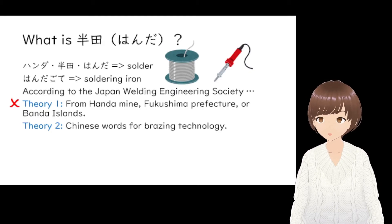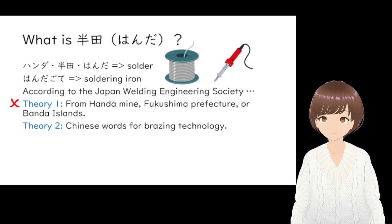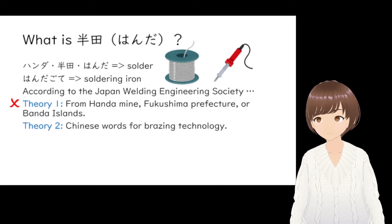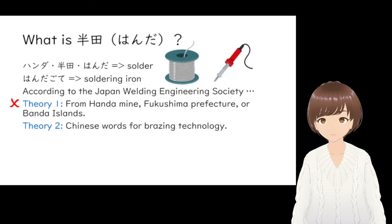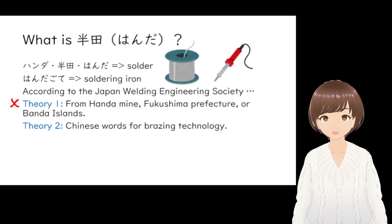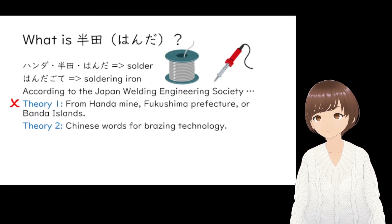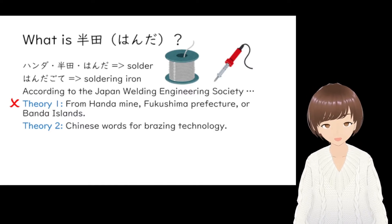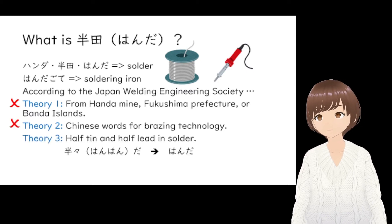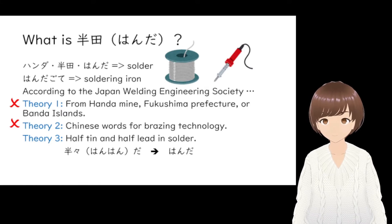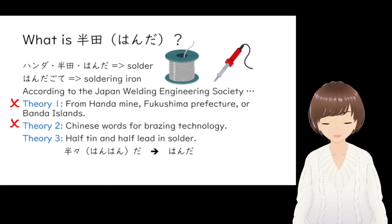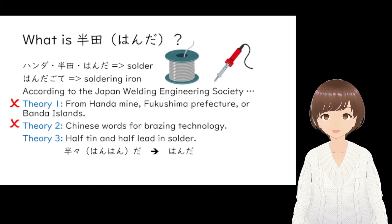Theory number two is that since brazing technology came from China, the word in Chinese changed to HANDA. According to the Japan Welding Engineering Society website, this is also unlikely. While the original word was possibly HANRA, it was actually pronounced RONRA at the time when the technology came to Japan. The last theory is that because solder contains half tin and half lead, it was perhaps 'half and half,' and we say HANHANDA, which became HANDA.